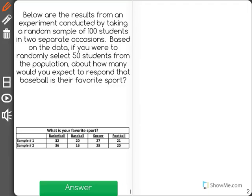Below are the results from an experiment conducted by taking a random sample of 100 students in two separate occasions. Based on the data, if you were to randomly select 50 students from the population, about how many would you expect to respond that baseball is their favorite sport?